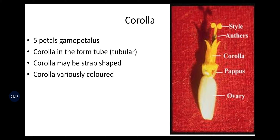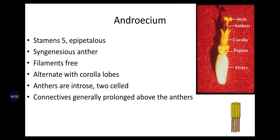Corolla is five-petaled, gamopetalous, in the form of a tubular shape. Corolla may be strap-shaped and is variously colored. Androecium is the male reproductive part; stamens are five, epipetalous, syngenesious anthers, filaments free, alternate with corolla lobes. Anthers are introrse, two-celled, and connectives are generally prolonged above the anthers.